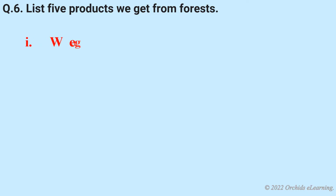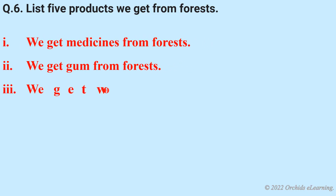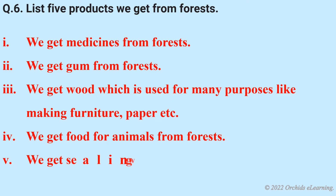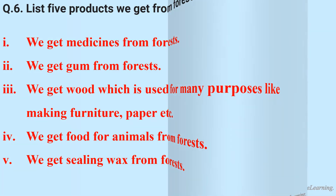Question: List five products we get from forests. We get medicines from forests. We get gum from forests. We get wood, which is used for many purposes like making furniture and paper. We get food for animals from forests. We get sealing wax from forests.